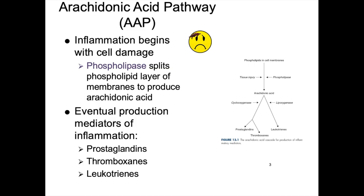Inflammation begins with cell damage which cleaves phospholipase from the phospholipid layer of the cell membranes to produce arachidonic acid. Through that process we have production of mediators of inflammation called eicosanoids: prostaglandins, thromboxanes, and leukotrienes. These are associated with cyclooxygenase, the enzyme that produces thromboxanes and prostaglandins, and lipoxygenase is the enzyme that creates leukotrienes.